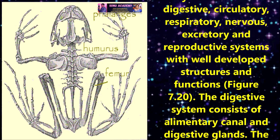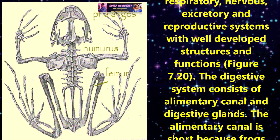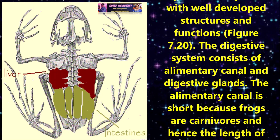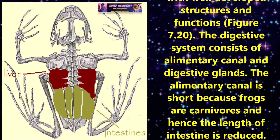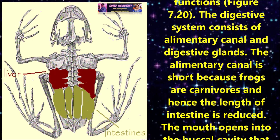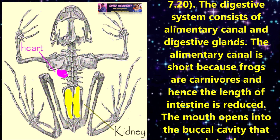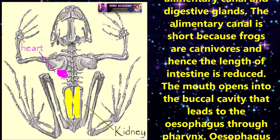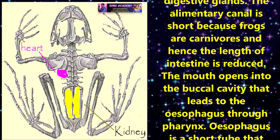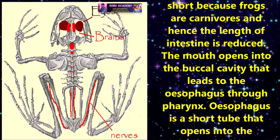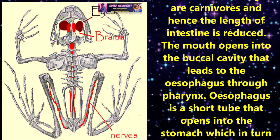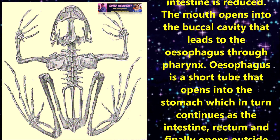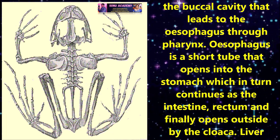The digestive system consists of an alimentary canal and digestive glands. The alimentary canal is short because frogs are carnivores, and hence the length of the intestine is reduced. The mouth opens into the buccal cavity, which leads to the oesophagus through the pharynx.